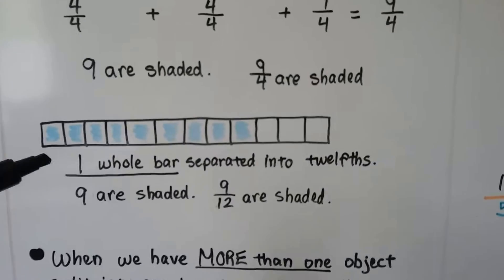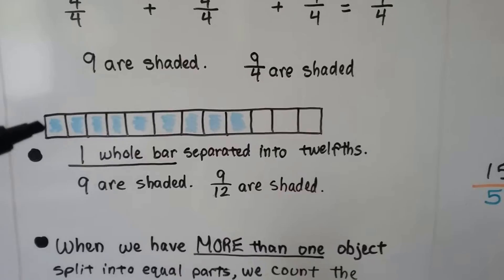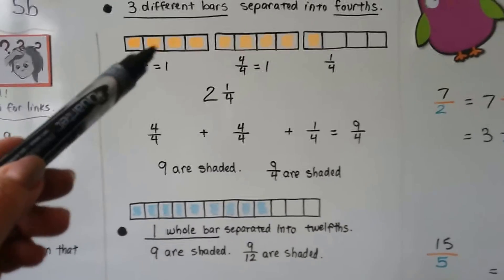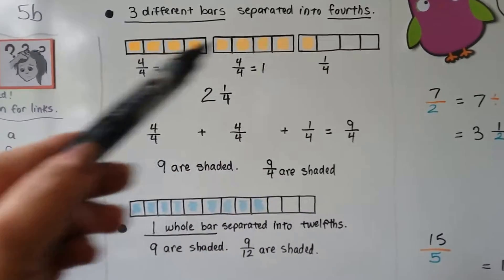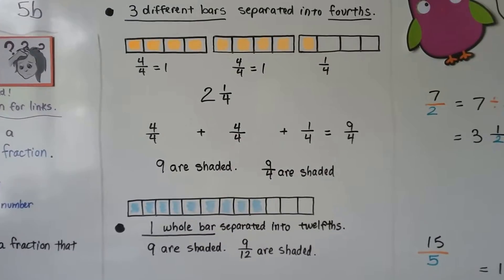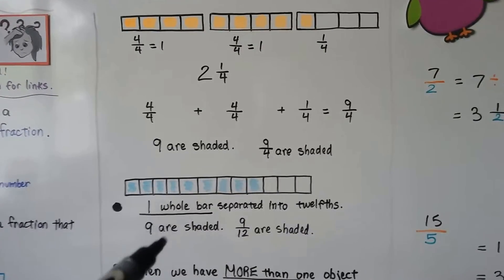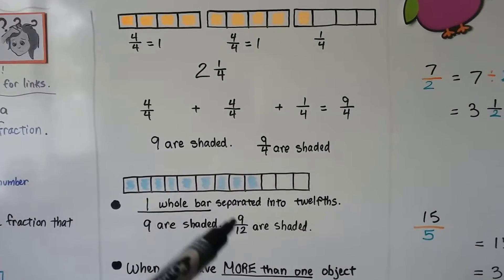Now here's the difference when we have one whole bar separated into 12ths. Because look at this one. We have 4, 8, 9, 10, 11, 12 equal parts, right? Well, we have 12 equal parts here, but this one has 9 twelfths shaded.